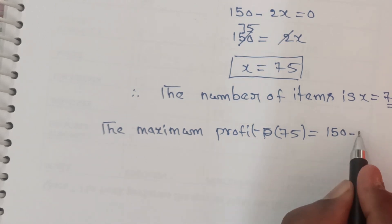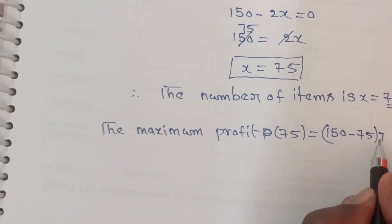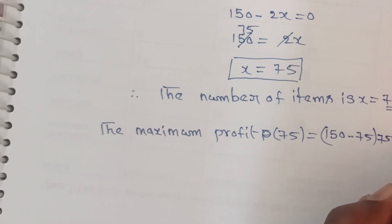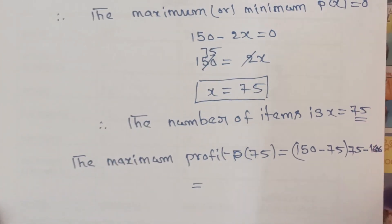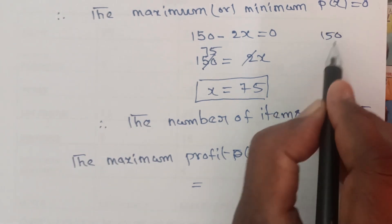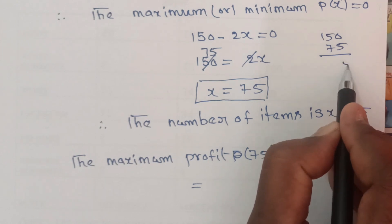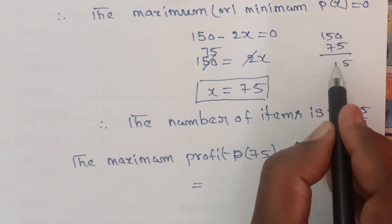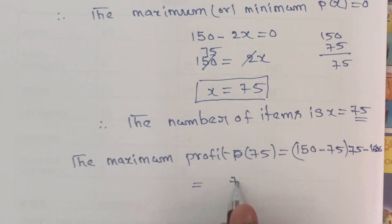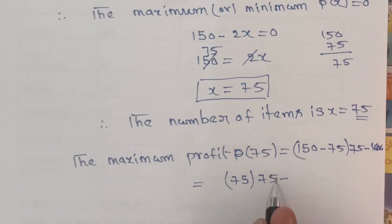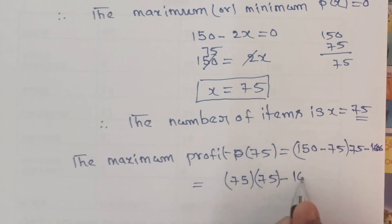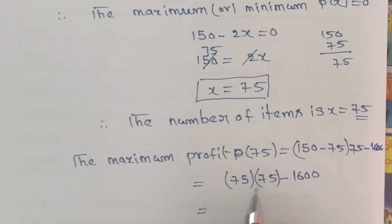Calculating: 150 × 75 gives... 75 × 75 = 5625, minus 1600.